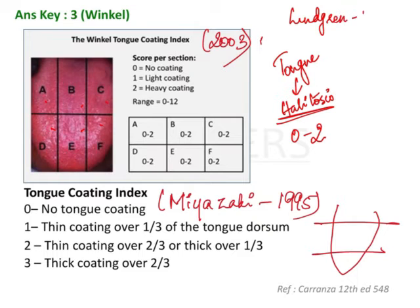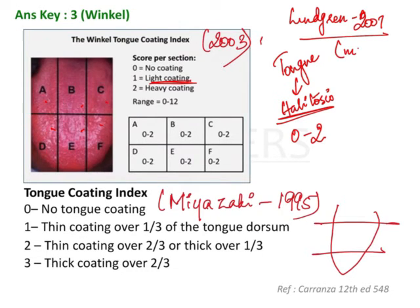Lundgren in 2007 noticed that the light coating present on the tongue is usually a normal finding. That is why using a score of one, which represents light coating, is prone to produce false results. For this reason, he removed score one, and that is what is called the modified Winkle tongue coating index.